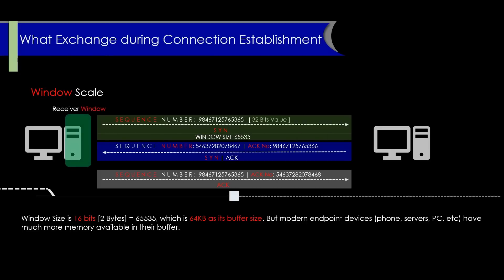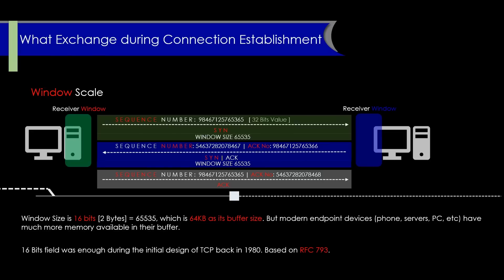When a TCP sender sends data to the receiver, it sets a window size in the TCP header indicating how much data it is willing to send before requiring an ACK. Based on RFC 793, the TCP header window field is only 2 bytes (65,535 max), which was sufficient for slow networks at the time. However, with the advent of high-speed networks, this limit became a bottleneck. Window scaling allows the size to increase beyond this limit using a scaling factor in the TCP options. If the scaling factor is 2, it indicates how many times the window size can be increased, enabling efficient communication over high-speed networks.